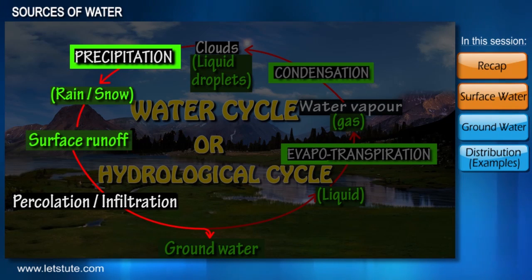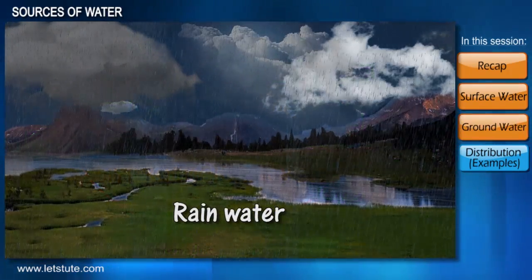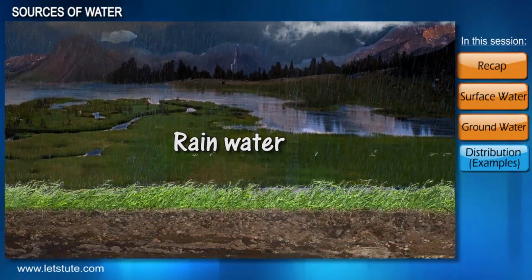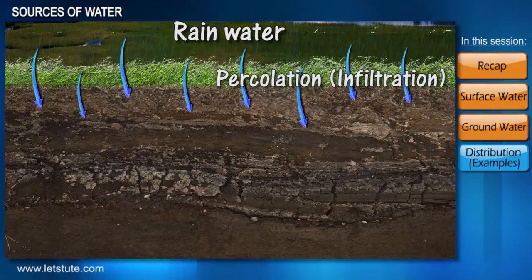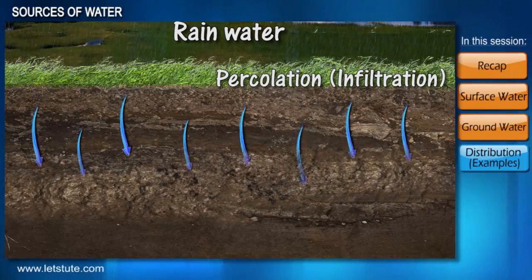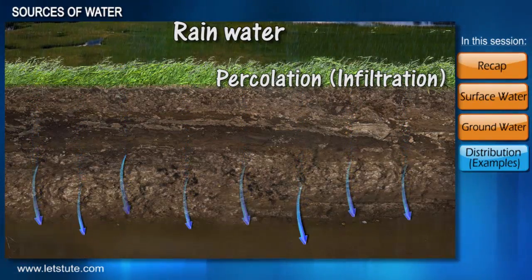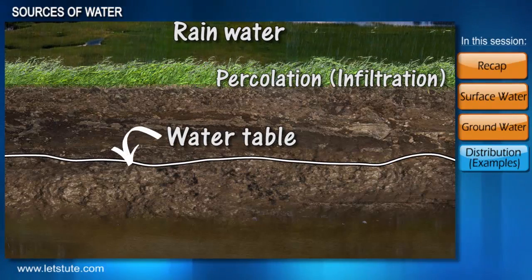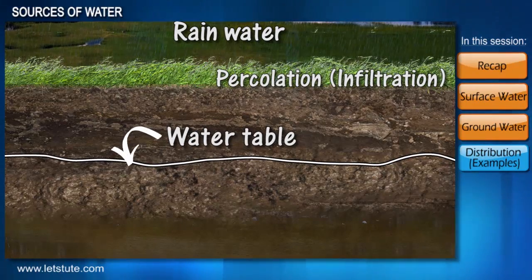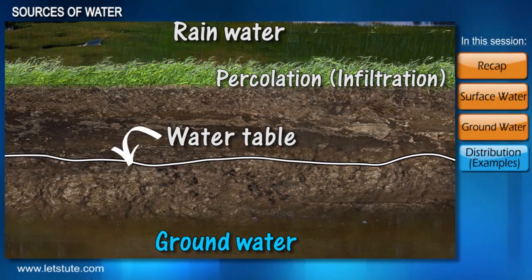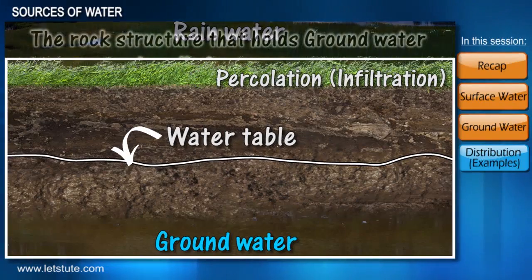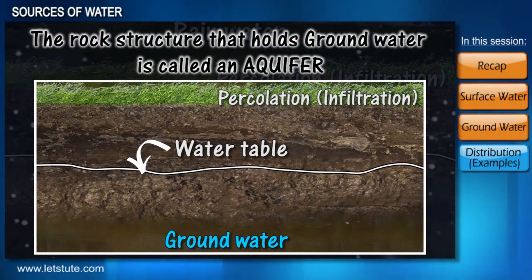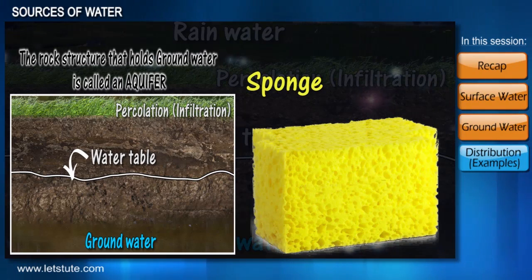Some amount of water seeps into the ground. Having understood how surface water is formed, let's see the process of percolation or infiltration. Some amount of rainwater also seeps down or percolates into the ground. As the water moves down, the soil particles or the spaces between the soils become full of water. This level of ground saturation is called the water table, and the water found there is called groundwater.